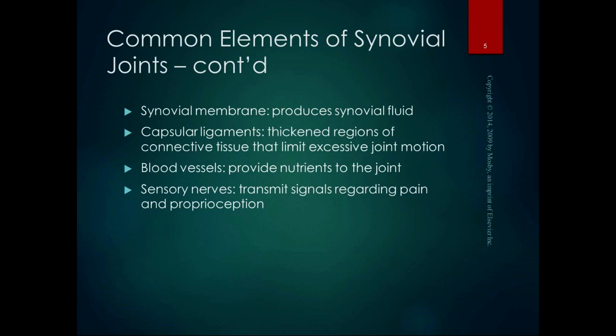Think of ligaments as the strapping tape of our body — they're preventing certain motions. When you think about a ligament, ask what motion does it prevent. Blood vessels to the synovial joint provide nutrients to the joint, which is very important. Sensory nerves transmit signals regarding pain and proprioception to the nervous system, which is very important for balance and for pain signals.